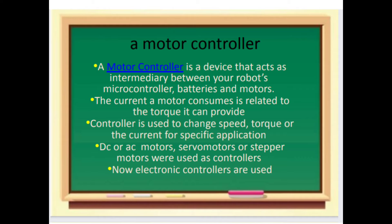Each coil or contact corresponds to the status of a single bit in the programmable controller memory. Each rung of ladder language typically has one coil at the far right, though some manufacturers may allow more than one output coil on a rung.